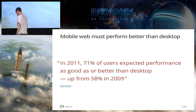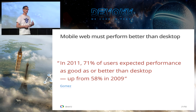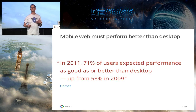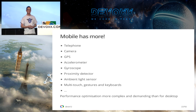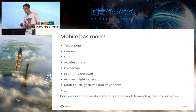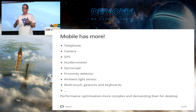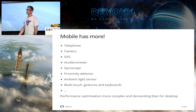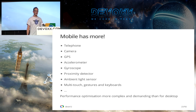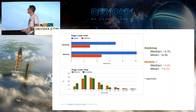Some research from Gomez shows that users are actually expecting better performance on mobile than on desktop, potentially, and this is increasing all the time. We've come from this world of the desktop situation where you have the same old keyboard, monitor, and box under the table. Now we've got these mobile devices where optimisation of performance is more and more complex — these are more complex devices.